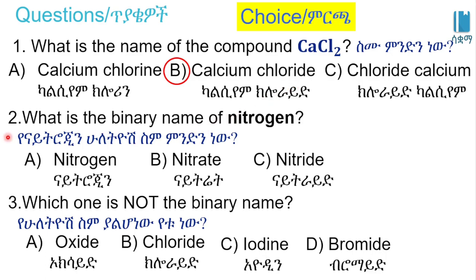What is the binary name of nitrogen? Option A: nitrogen. Option B: nitrate. Option C: nitride.